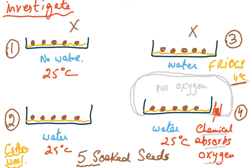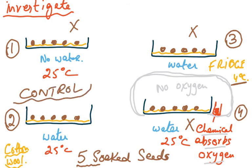With no oxygen, there is no germination. Petri dish one has no germination because there is no water; petri dish three has no germination because it is kept in the fridge at low temperature; petri dish four has no germination because oxygen has been removed. Petri dish two is the control — it provides all three ingredients (water, suitable temperature, and oxygen) for comparison, proving that all three factors are necessary for germination.